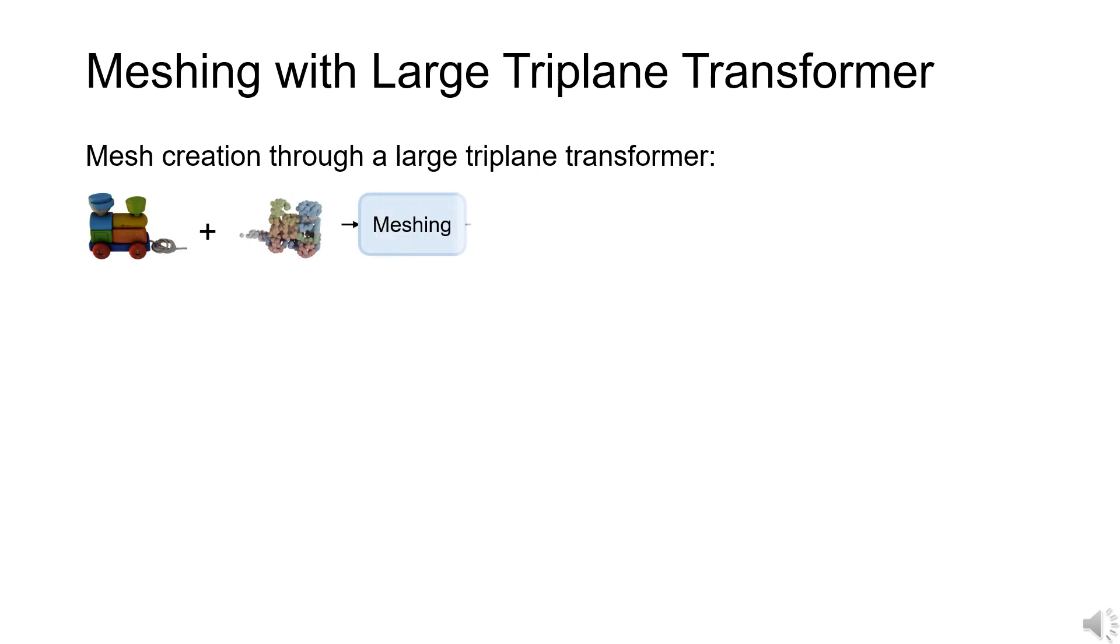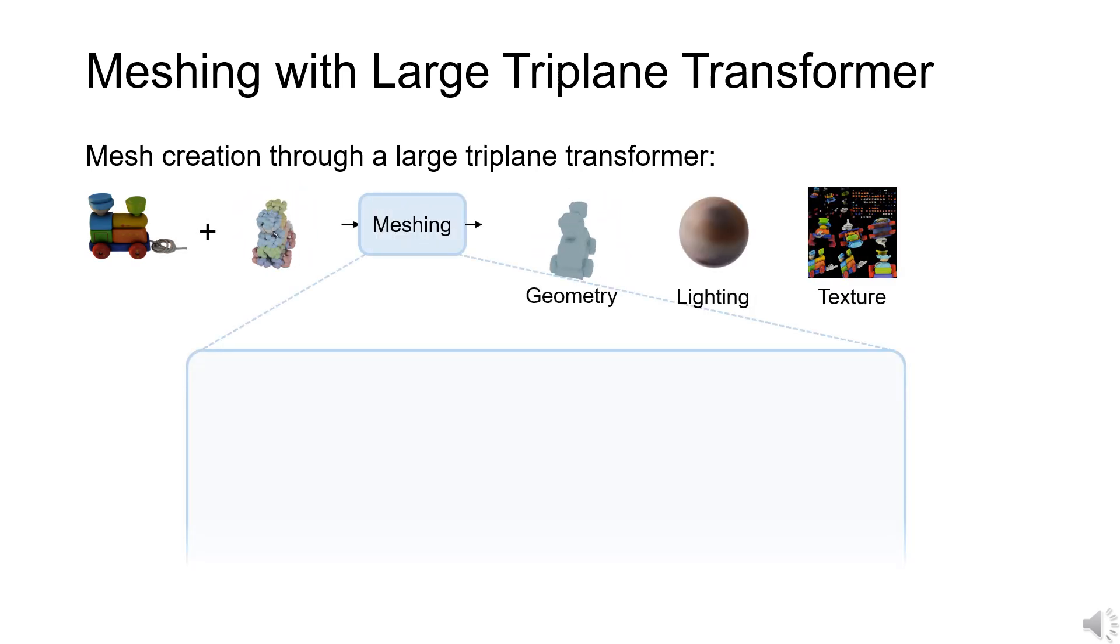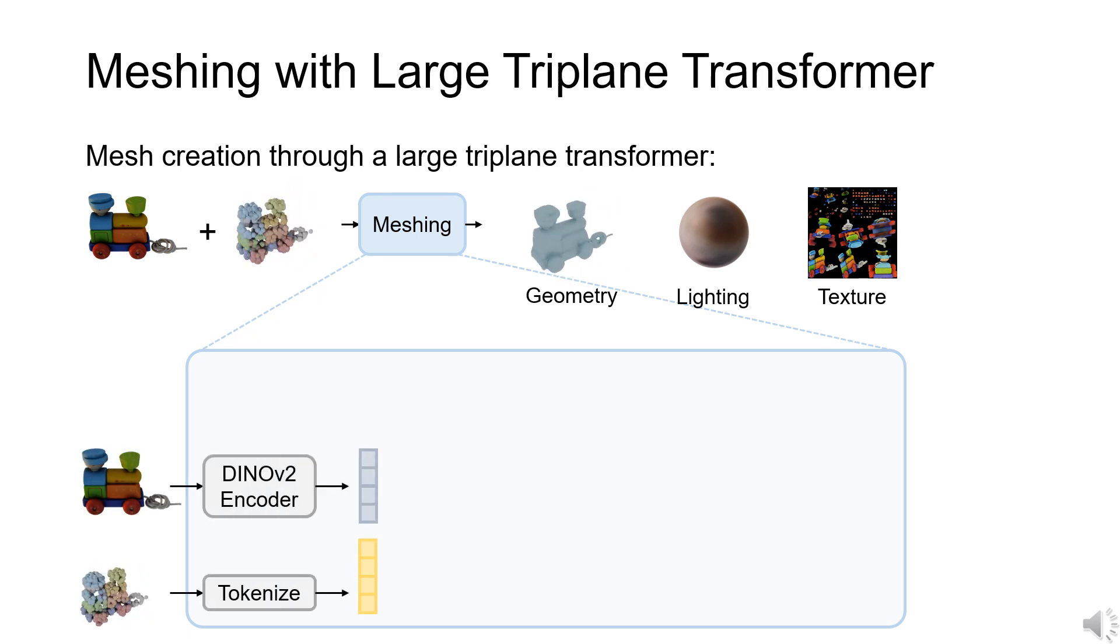The meshing stage uses the image and the point cloud to create a textured mesh and an environment illumination. During training, a differentiable renderer renders them to minimize the rendering loss. Our meshing model first encodes the image and the point cloud as latent vectors.